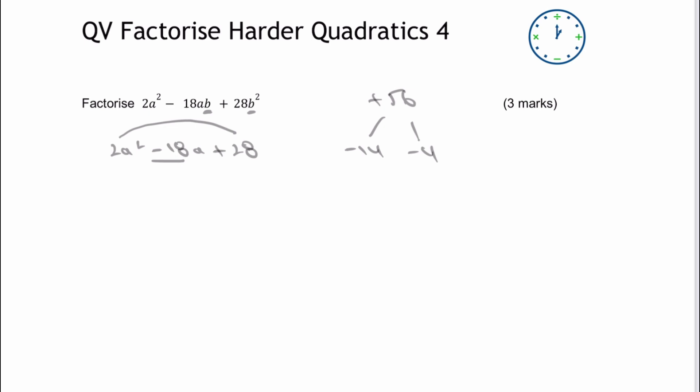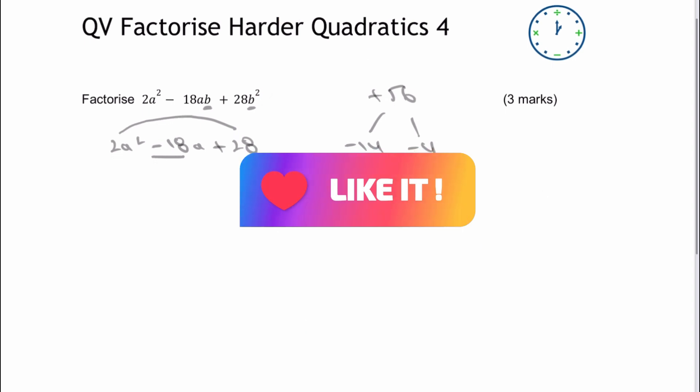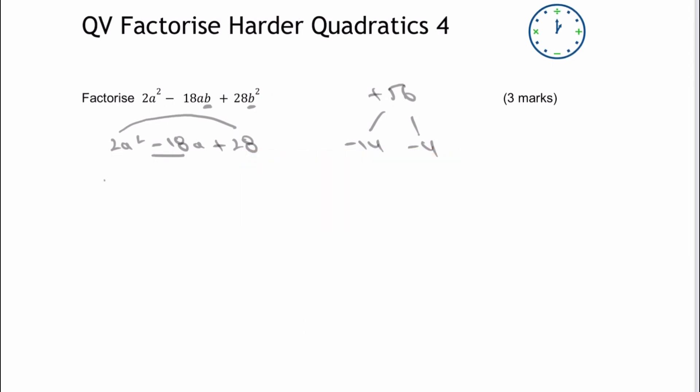Okay, so let's factorise that in exactly the same way as we have done with the previous videos, in that I'm going to rewrite this as 2a squared, and rather than 18a, I'm going to write minus 14a minus 4a, because both those are minus 18a, and then plus 28 at the end.